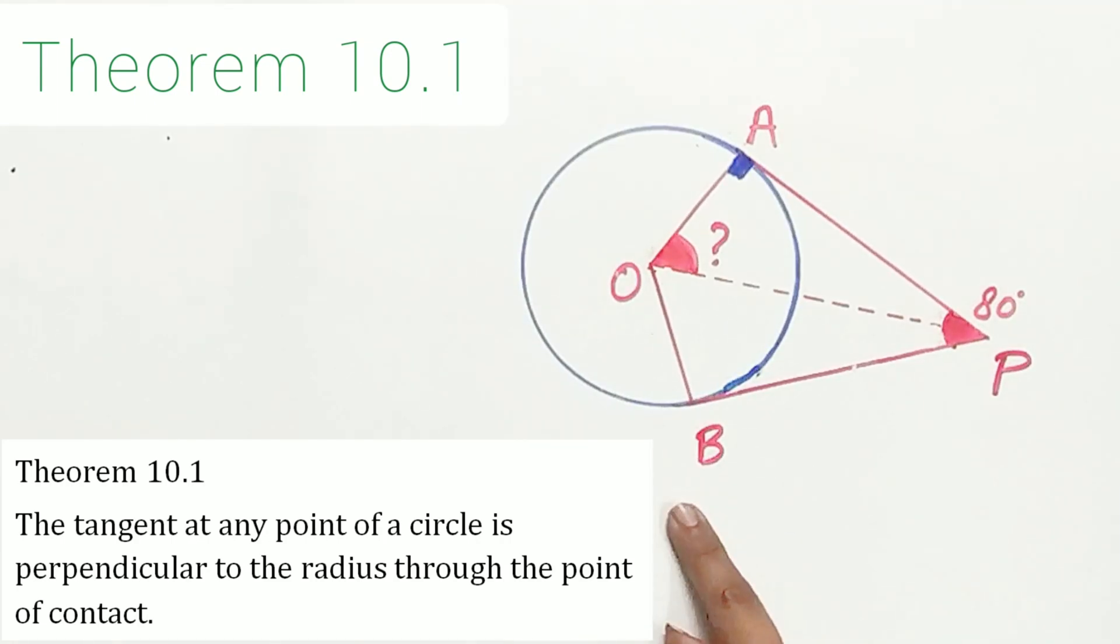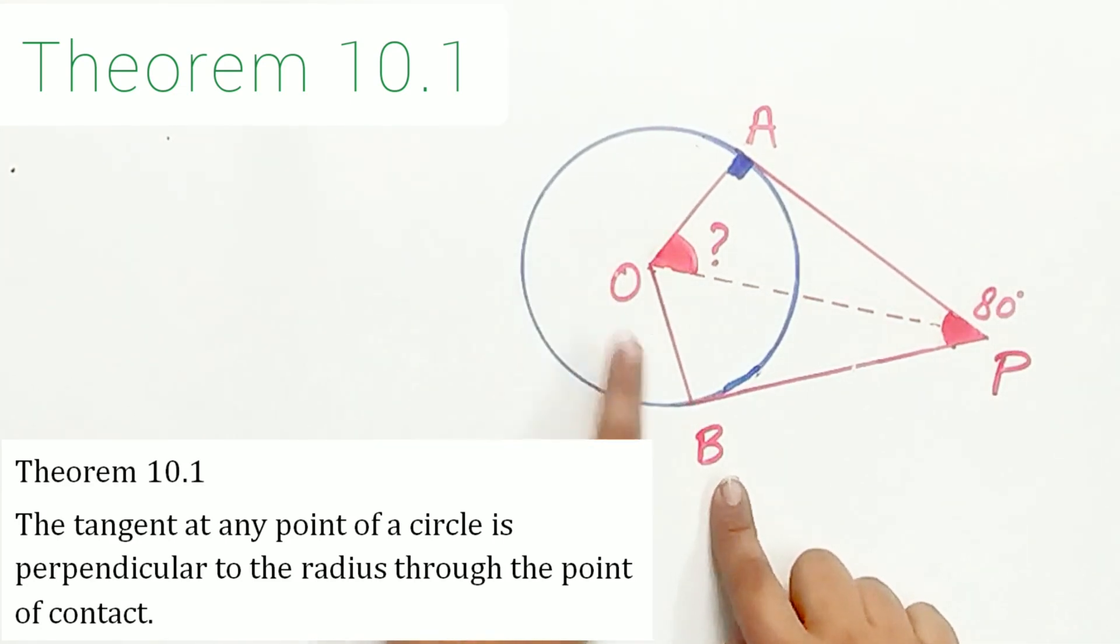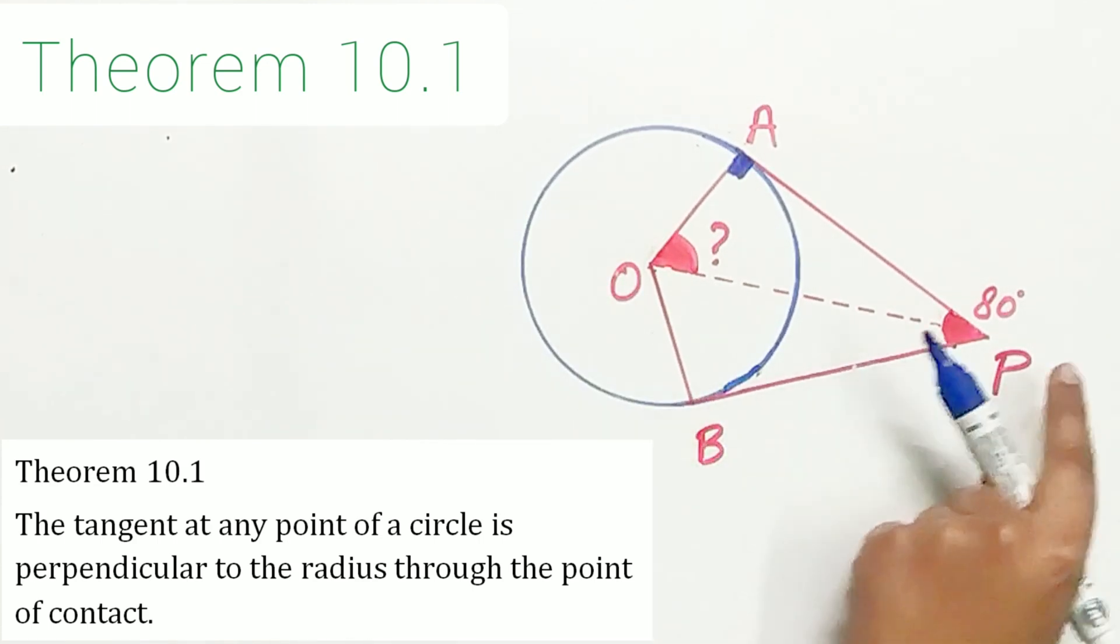Similarly, PB is the tangent, OB is the radius. They are both meeting at point B. Hence, according to theorem 10.1, angle OBP is equal to 90 degree.